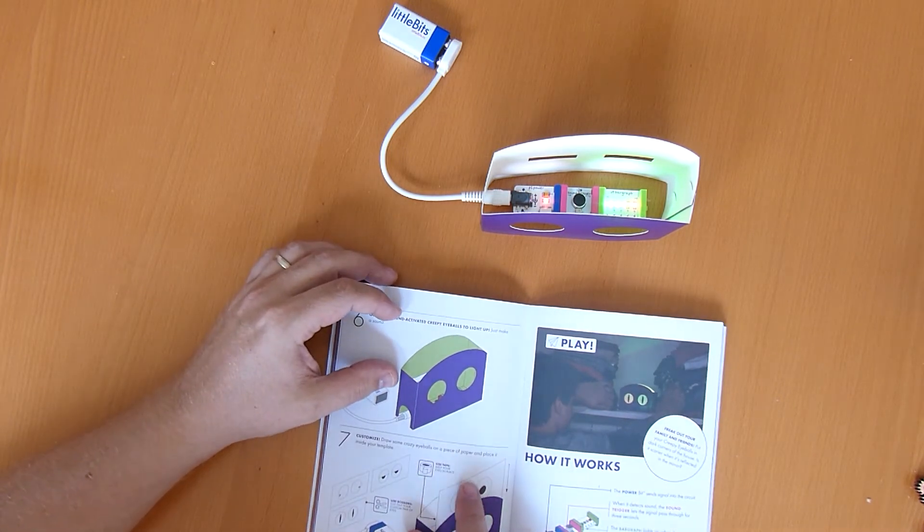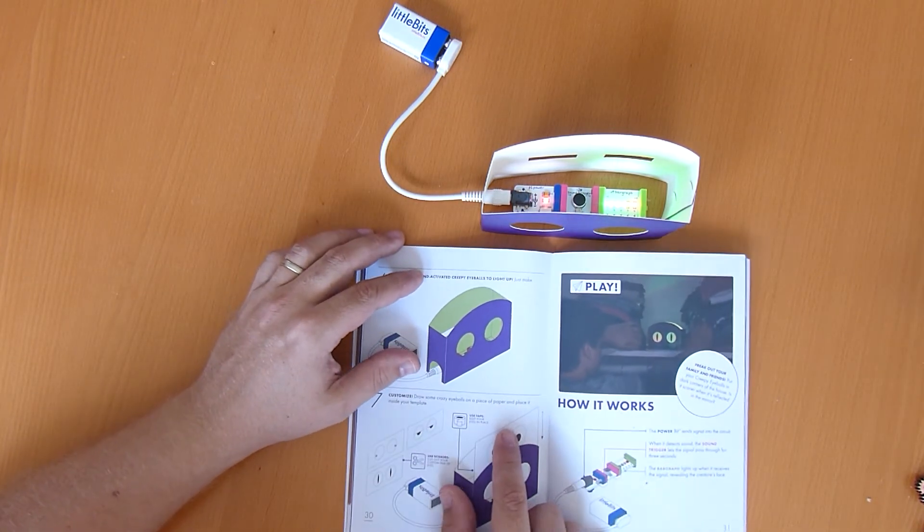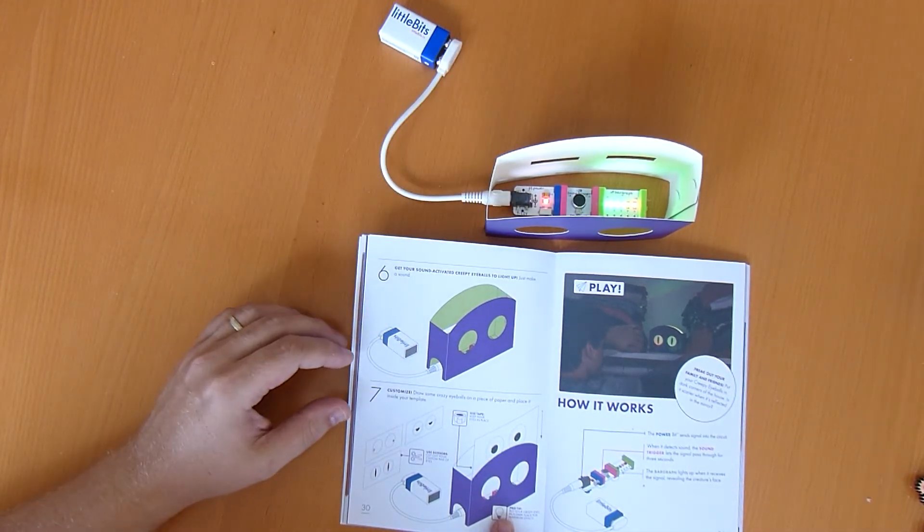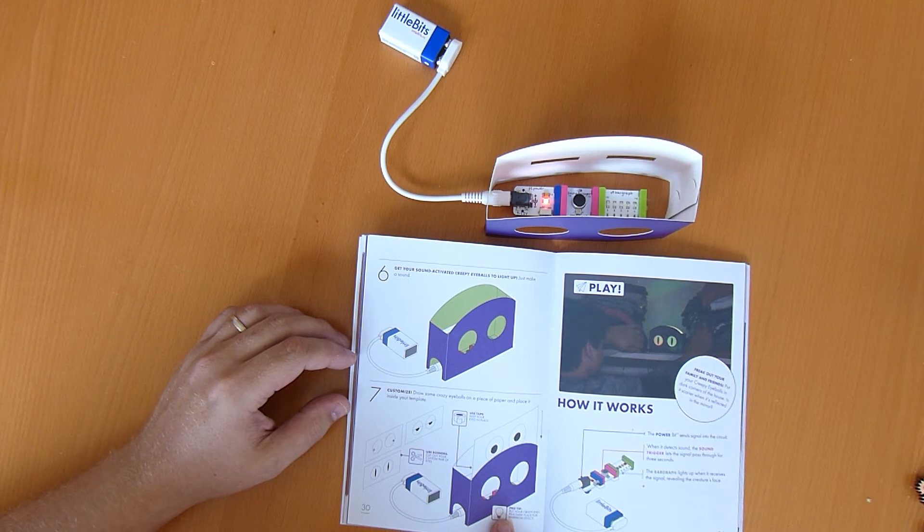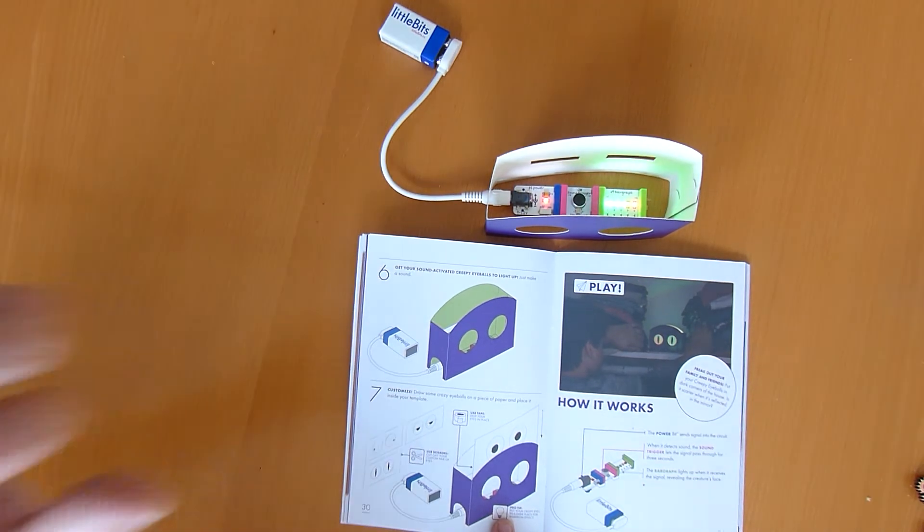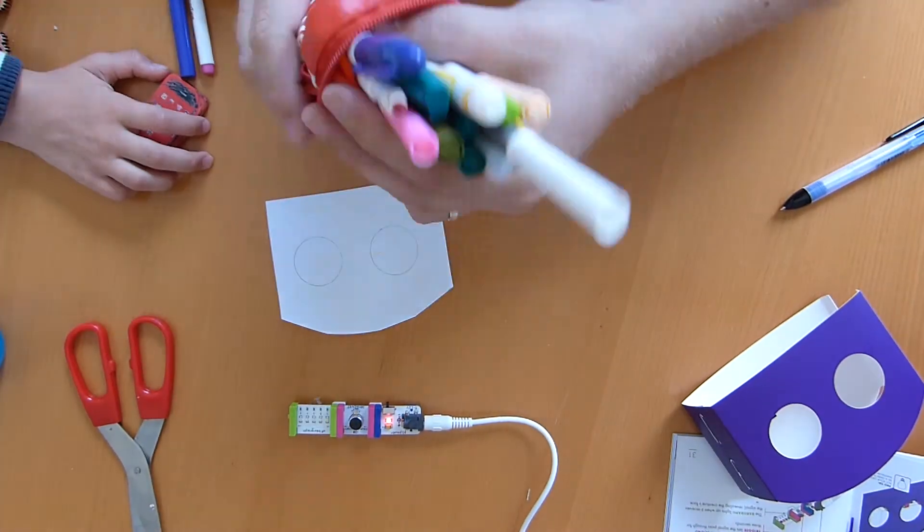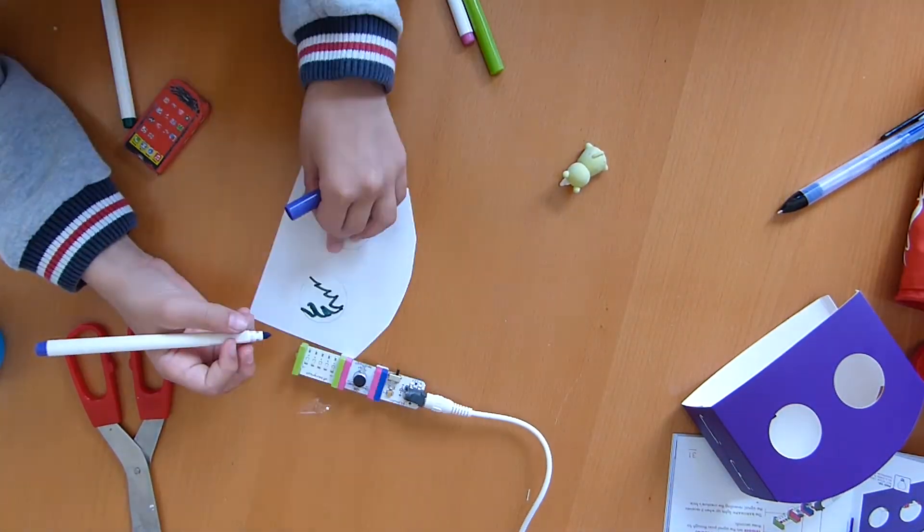Well it picked up your scary sound. But you can customize it yourself it says by drawing your own eyeballs and then sticking them in with tape. So maybe we'll go and do that on a bit of paper. Yeah. Should we go and do that? Yeah!